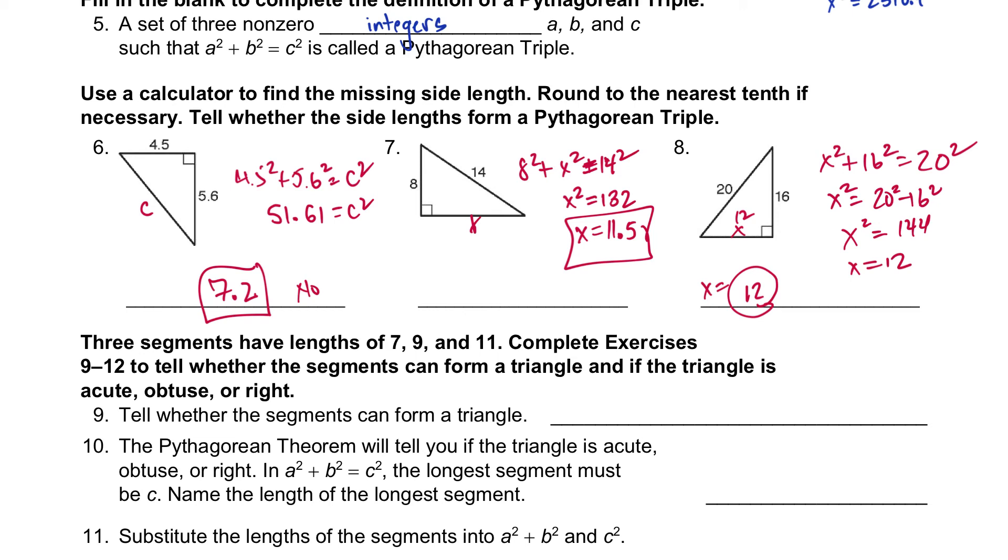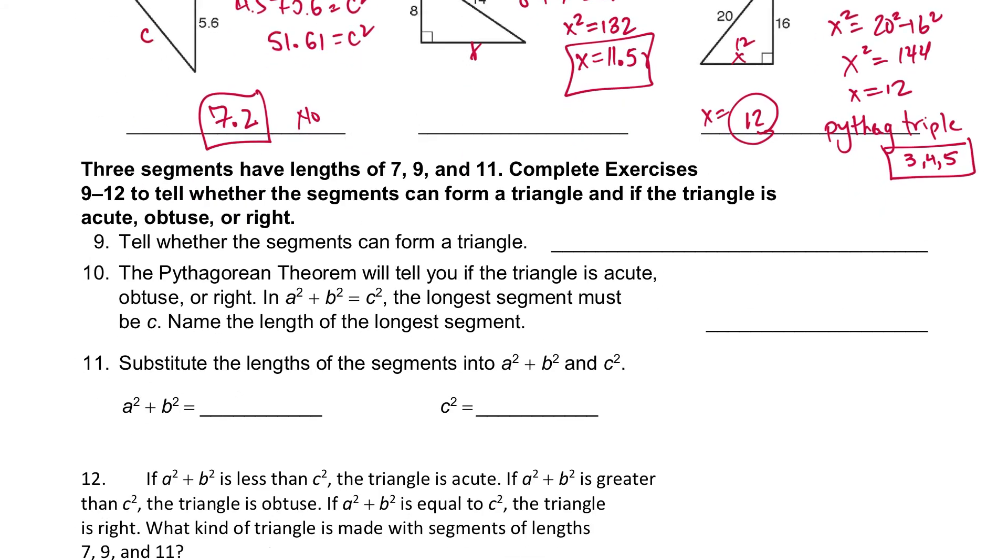And yes, this one actually will be a Pythagorean triple. In fact, if you divide all these sides by 4, this is a Pythagorean triple. And it's the one where if you divide it by 4, you get 3. Divide this by 4, you get 4 and 5. That is the Pythagorean triple that we end up with there.